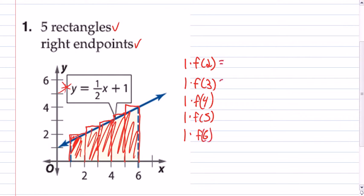So we know it's going to equal, we're going to get the same answer. When we plug in two into the equation right here, it's going to be one half times two plus one, which is equal to one plus one, which is equal to two.